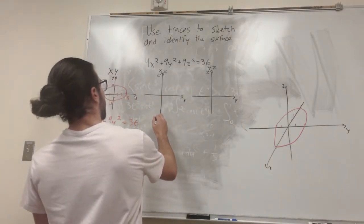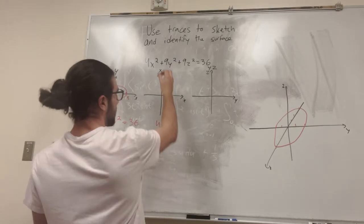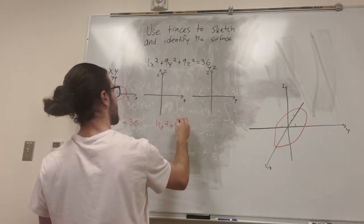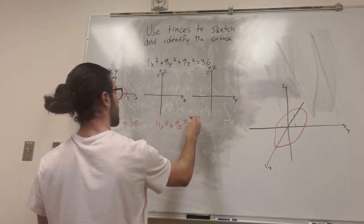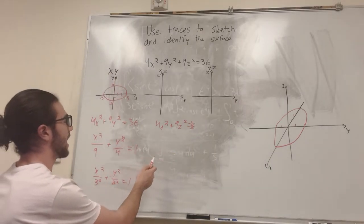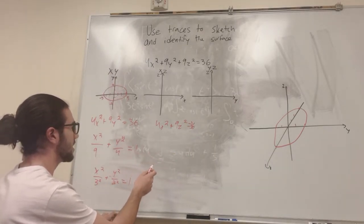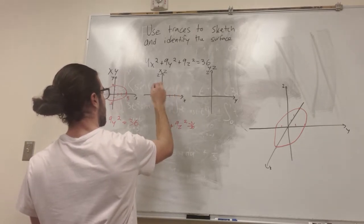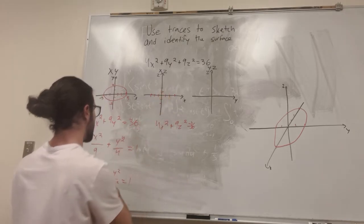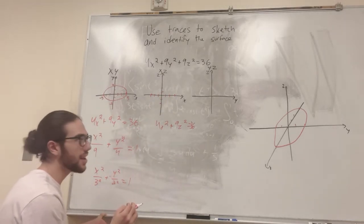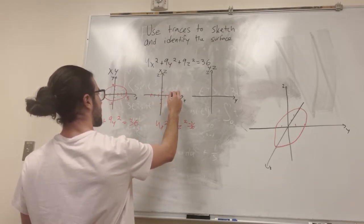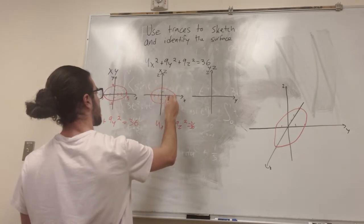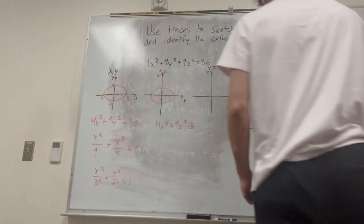Once again, you're going to have 4x squared plus 0 plus 9z squared equals 36. Now actually, this is the exact same as the xy plane, except the y is replaced with z this time. So it's going to be the same. If you follow the same steps, you can go ahead and do it at home if you want. You're going to get the same thing. The x intercepts are going to be at 3, and the z intercepts are going to be at 2 and negative 2.